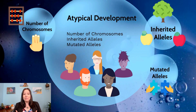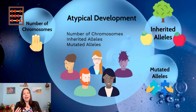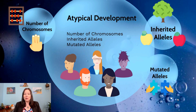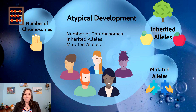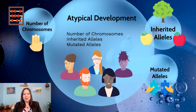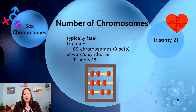We just finished talking about intersex, which is a type of atypical development. Now we're going to talk about some additional types of atypical development in genetic development. One type involves the number of chromosomes — having an extra or missing chromosome. Another type is when inherited alleles lead to atypical traits. The last is when a mutation in your alleles leads to atypical traits.